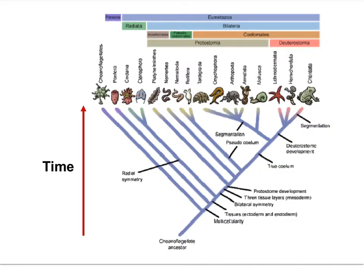This slide also foreshadows the next movie. You will need to become familiar with the following animal phyla: Porifera (the sponges); Cnidaria (the corals and anemones, animals with stinging cells); Platyhelminthes (flatworms, such as tapeworms); Arthropoda (animals with jointed legs, such as insects, spiders, or crabs); Annelida (segmented worms, such as earthworms); Mollusca (animals with shells, such as clams or snails); and Chordata (animals with backbones, such as mammals).